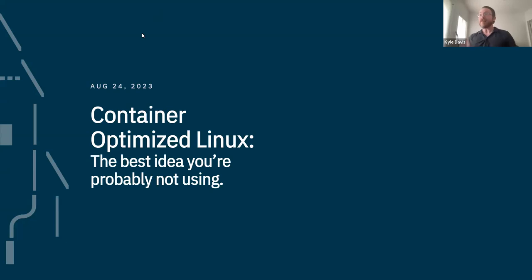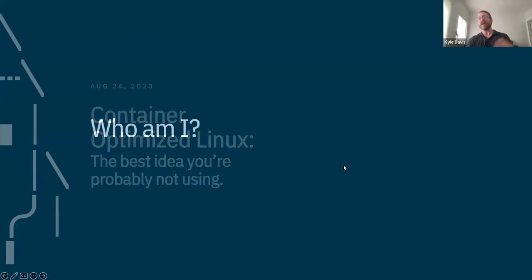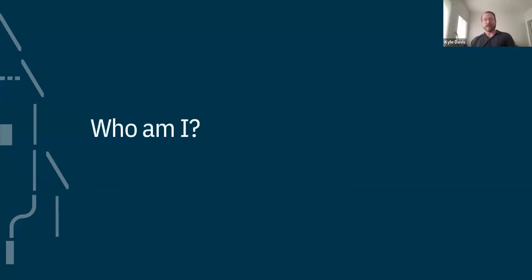Hey everybody, I'm really excited to be here and talk about container-optimized Linux — probably the best idea you're not actually using. My name is Kyle Davis, I'm the Senior Developer Advocate for Bottle Rocket, which is a container-optimized Linux distribution at Amazon AWS.